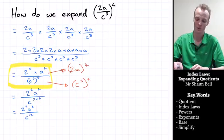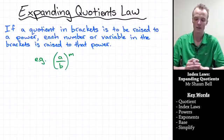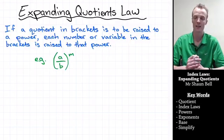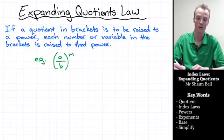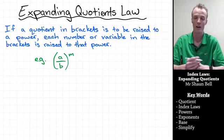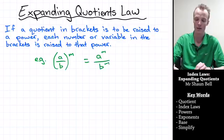This brings us to our expanding quotients law, which says: if a quotient in brackets is raised to a power, each number or variable in the brackets is raised to that power. For example, if we have the quotient of a over b in brackets raised to the power of m, that's going to be equal to a to the power of m over b to the power of m.